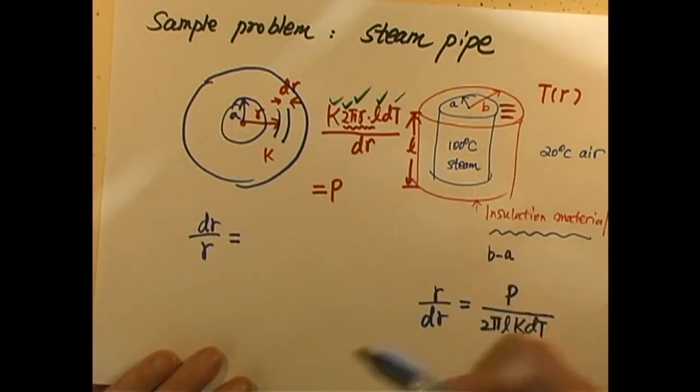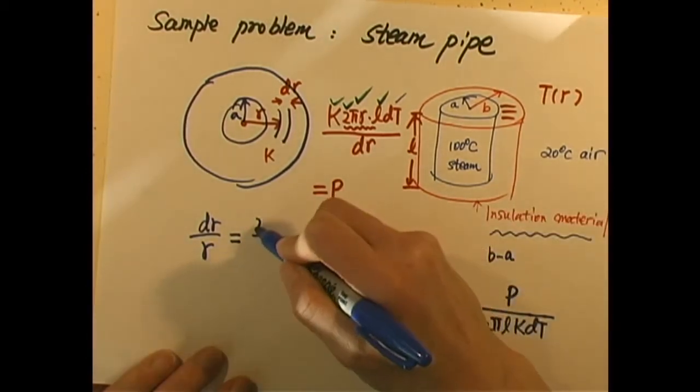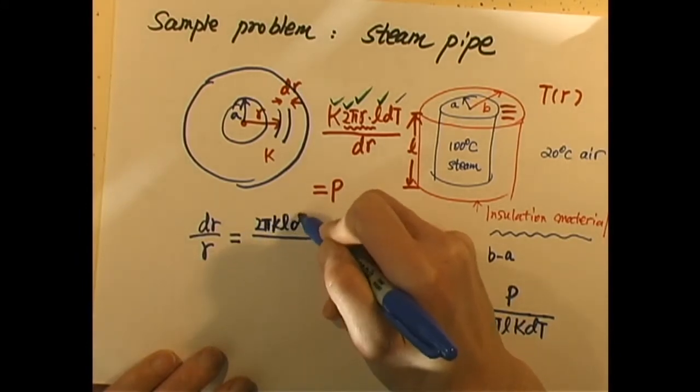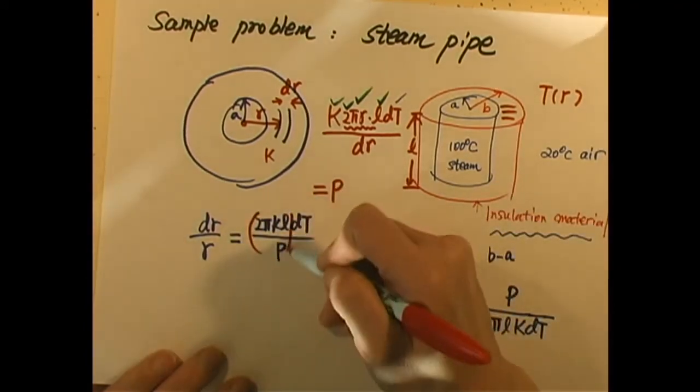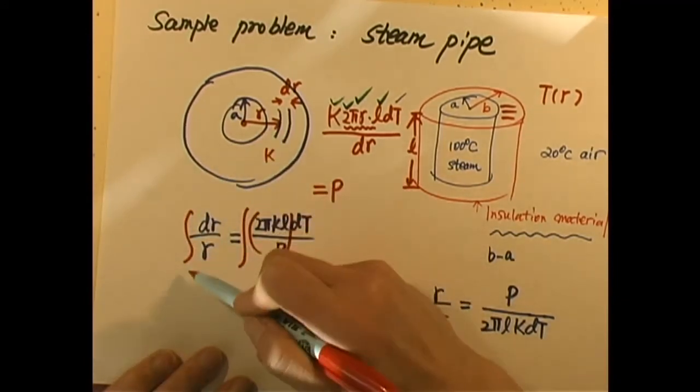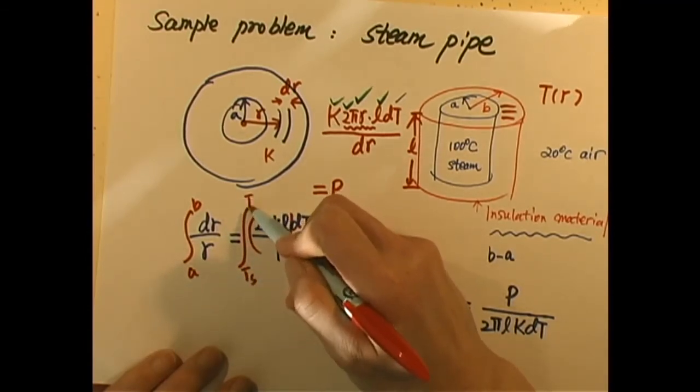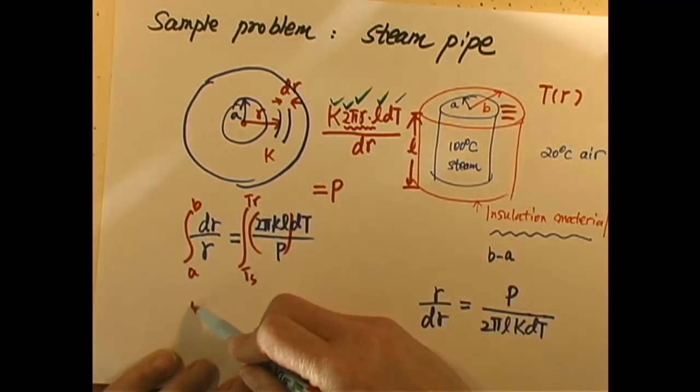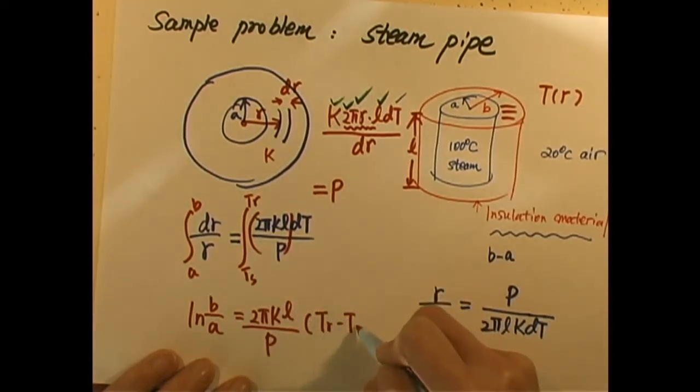For reciprocal we have dR over R, that gives us dT on the top: 2πKL dT over P. Since these are constants, if we do the integral from A to B, temperature at A is T steam, temperature at B is T room. So we get natural log B over A equals 2πKL over P times (T room minus T steam).